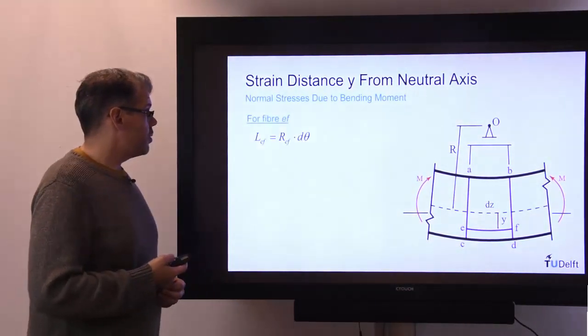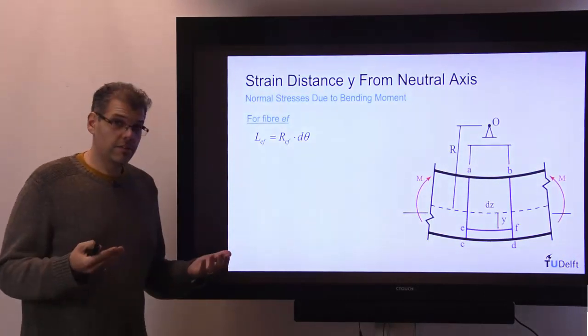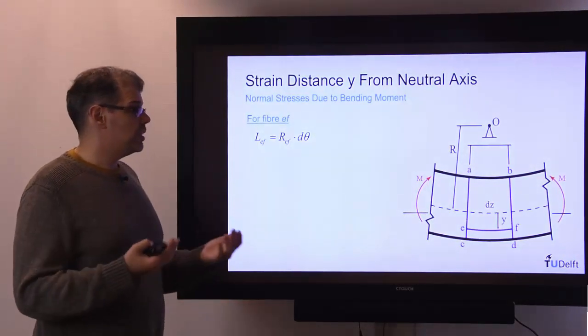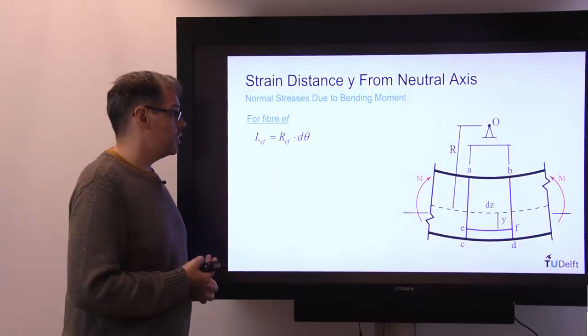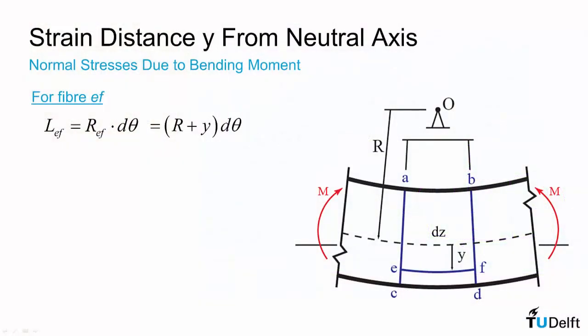So we look at fiber EF, and the length of fiber EF is going to be the instantaneous radius of curvature at fiber EF times dθ. Now we can actually still use our radius of curvature relative to our neutral axis, r, and just add our distance y from the neutral axis to that to get REF.